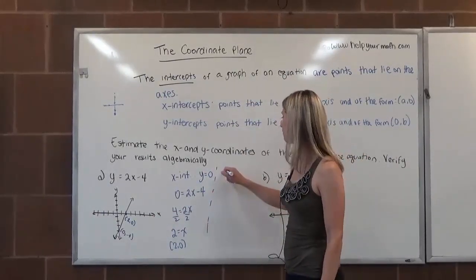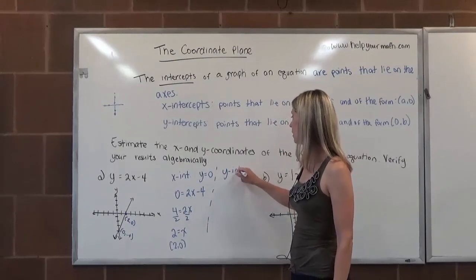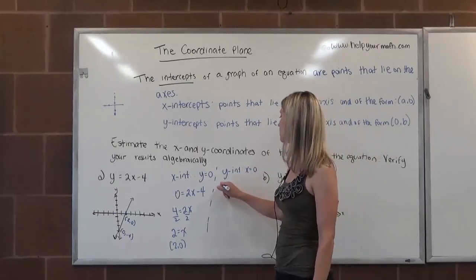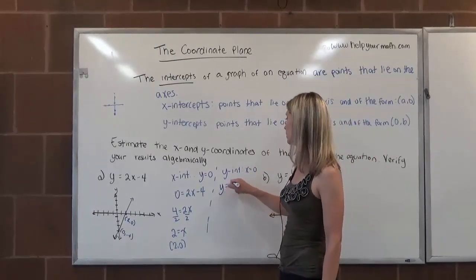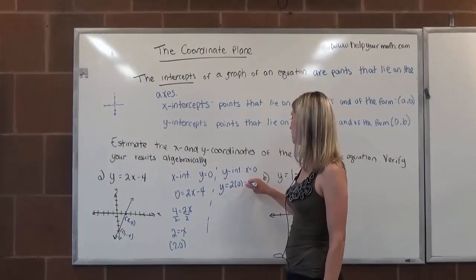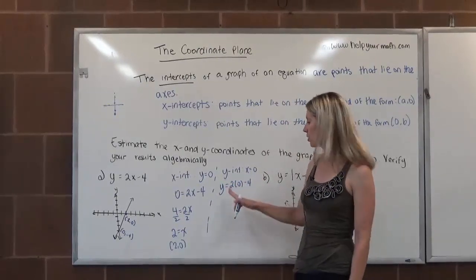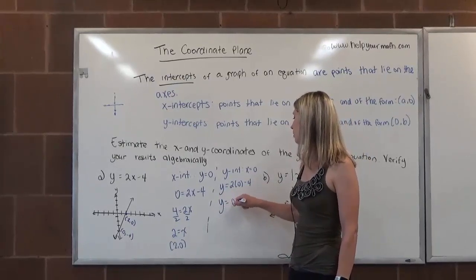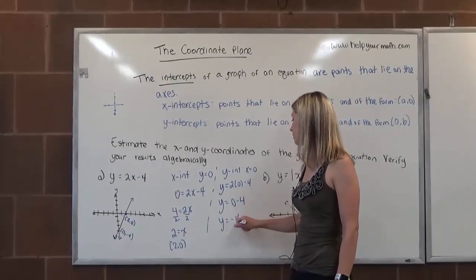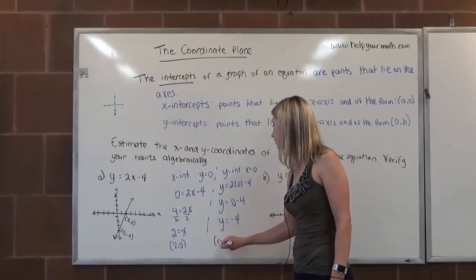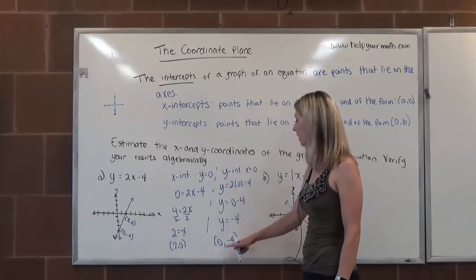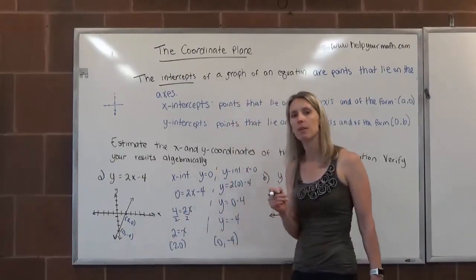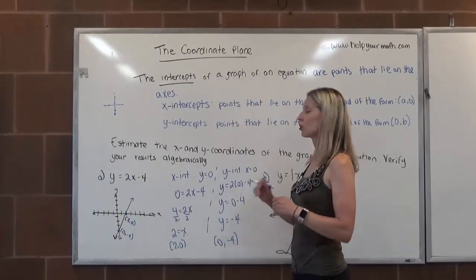To find the y-intercept, we substitute in 0 for x. Going back to our original equation: y equals 2 times 0 minus 4. Following order of operations, 2 times 0 is 0, and 0 minus 4 is negative 4. So we get y equals negative 4 — that's the ordered pair (0, negative 4). The x-coordinate is 0 and y is negative 4, which matches the graph. So the graph does match the algebra.